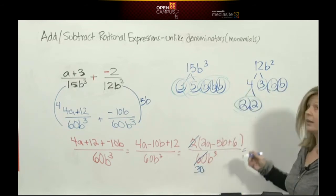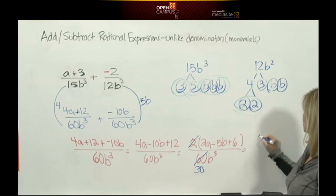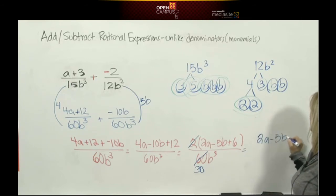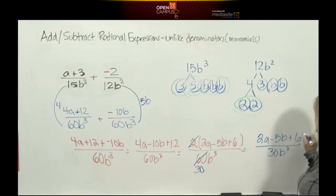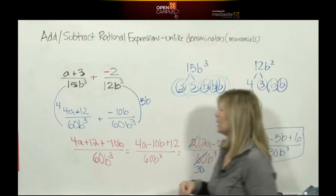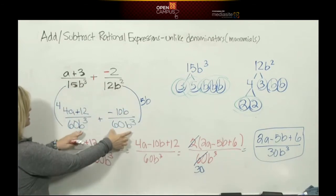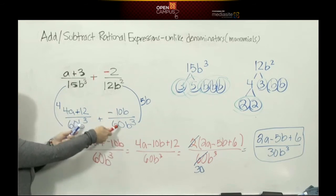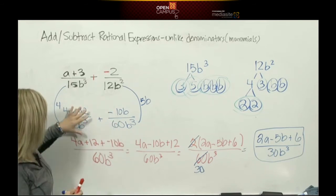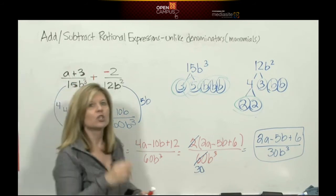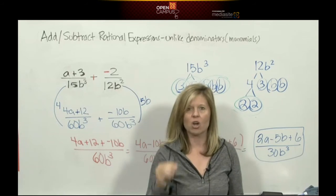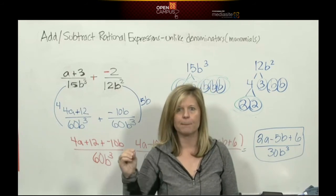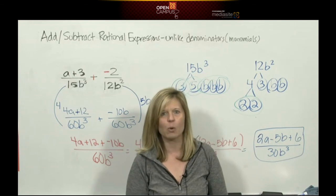So this final algebraic rational expression is 2a minus 5b plus 6 over 30b cubed. One of the biggest mistakes you guys make is you do the hard part. You'll get the least common denominator and write it, make the equivalent fractions, and then right here you want to start dividing. That's crazy. Because if you divide, you'll be back to where you started. So if you just follow the song, it's telling you step by step what to do. See you in the next video, we'll practice some more.